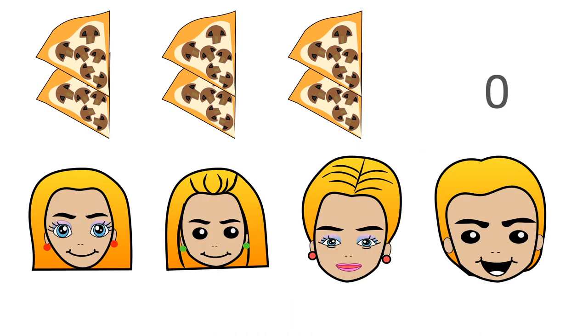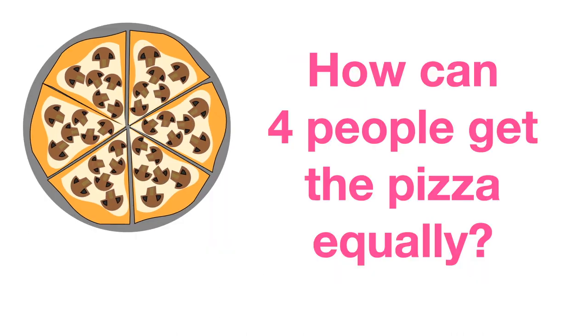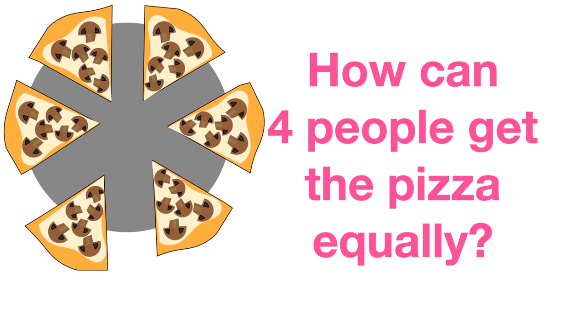If 3 people have 2 pieces of pizza equally, then 1 person cannot have any pizza. How can 4 people get the pizza equally?